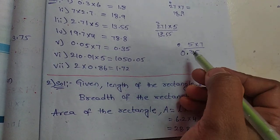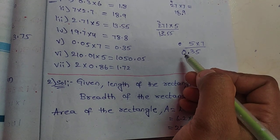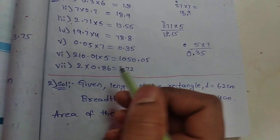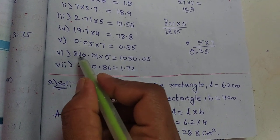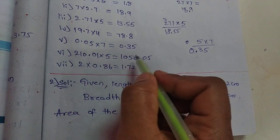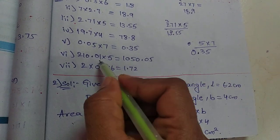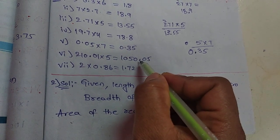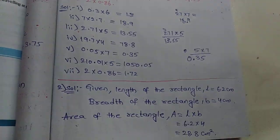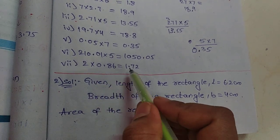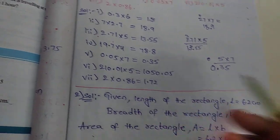When digits are not there, we place 0 before the decimal. Next, 210.01 into 5. First normal multiplication, then the answer. Here point is after two digits, so here also we count two digits and place the point. Next, the 7th one: 2 into 0.86 equals 1.72.